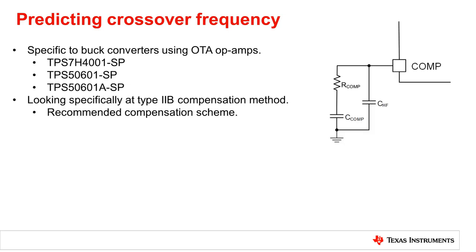We will also only be looking at specifically the type 2B compensation method as it is the recommended compensation scheme for an OTA buck converter.